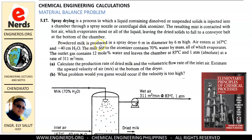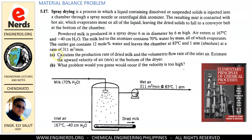Powdered milk is produced in a spray dryer 6 meters in diameter by 6 meters high. Air enters at 167 degrees Celsius and negative 40 centimeter water. The milk fed to the atomizer contains 70% water by mass, all of which evaporates. The outlet gas contains 12 mole percent water and leaves the chamber at 83 degrees Celsius and 1 atmosphere absolute at a rate of 311 cubic meters per minute.